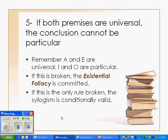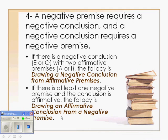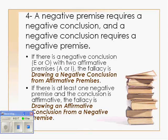Rule number 4 says that a negative premise requires a negative conclusion, and a negative conclusion requires a negative premise. So if there is a negative conclusion — that is, an E or an O statement — with two affirmative premises, A or I statements, the fallacy will be drawing a negative conclusion from affirmative premises. Look at that conclusion first: if it's negative, one of the other two premises has to be negative as well.